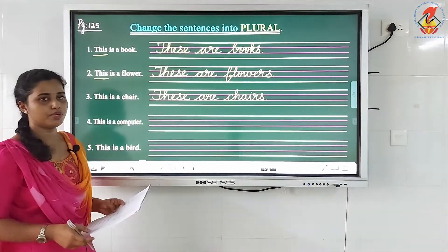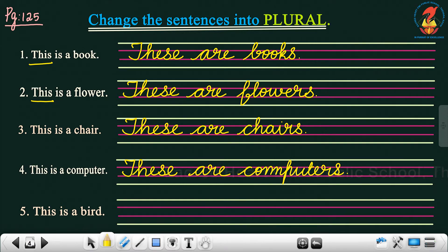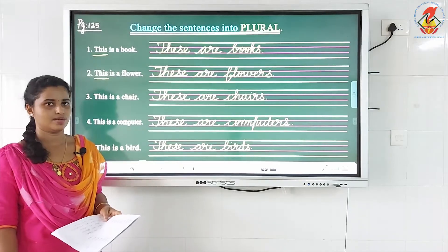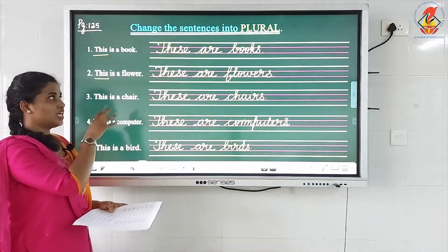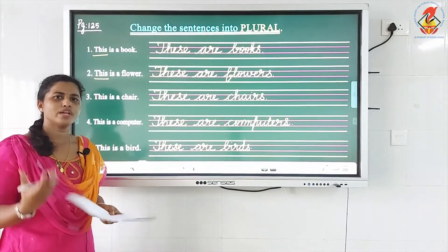Next: 'This is a computer.' Again, 'this' will change to 'these', 'is a' will be changed to 'are', and 'computer' — we add 'S' at the end — so 'computers'. These are computers. Last one: 'This is a bird.' Again, 'this' will change to 'these', 'are bird' — again will change by adding 'S' to make it plural. So the answer is: 'These are birds.' I hope the concept of changing 'this' to 'these' in a sentence is very clear. You can do a few more activities with the help of your parents — try to do a few in your rough book at home and it will be more clear.